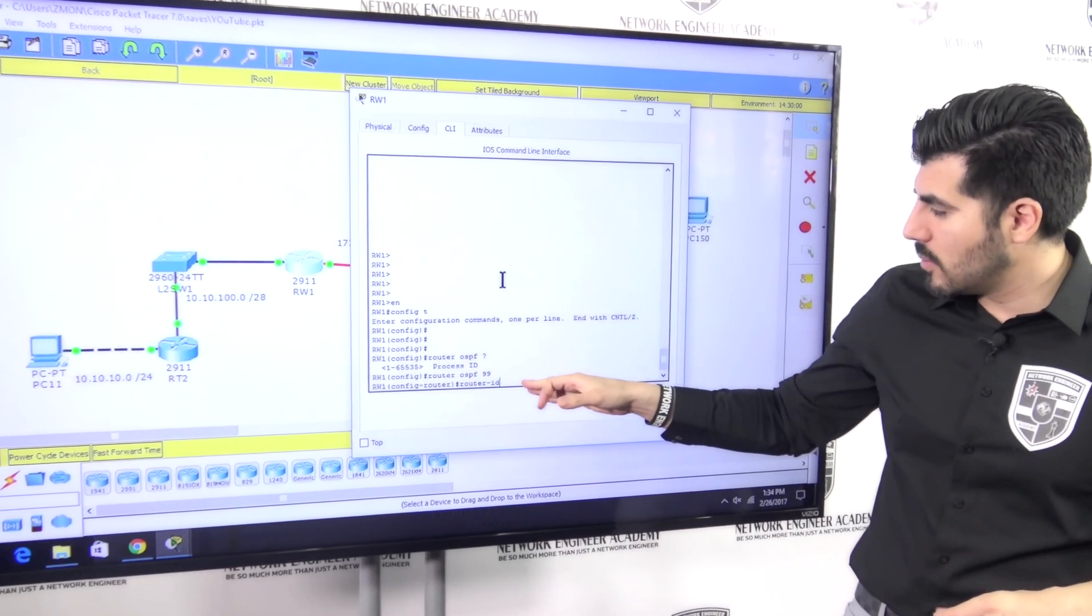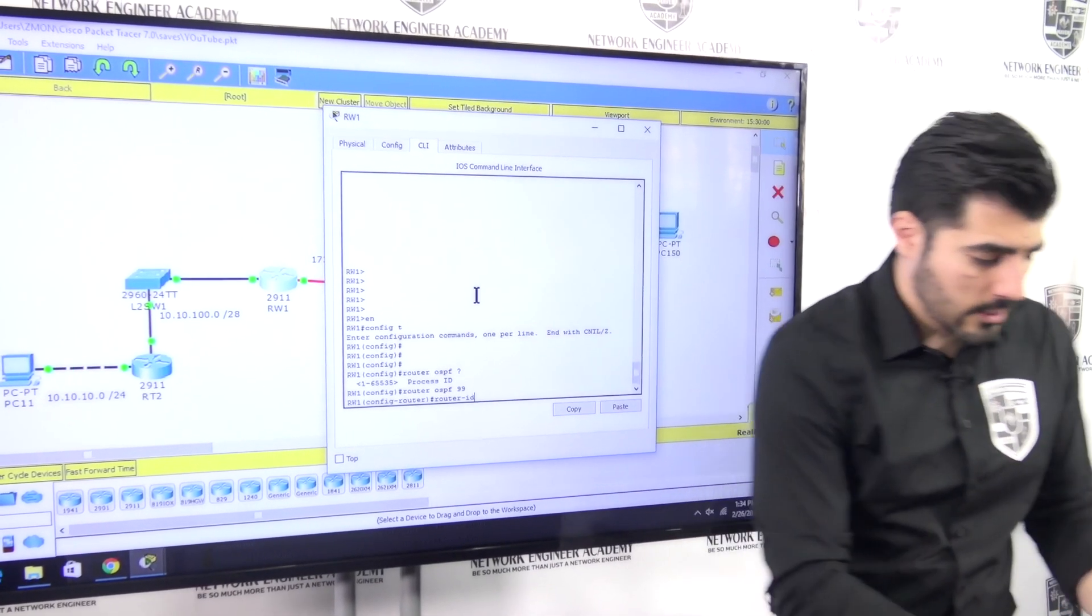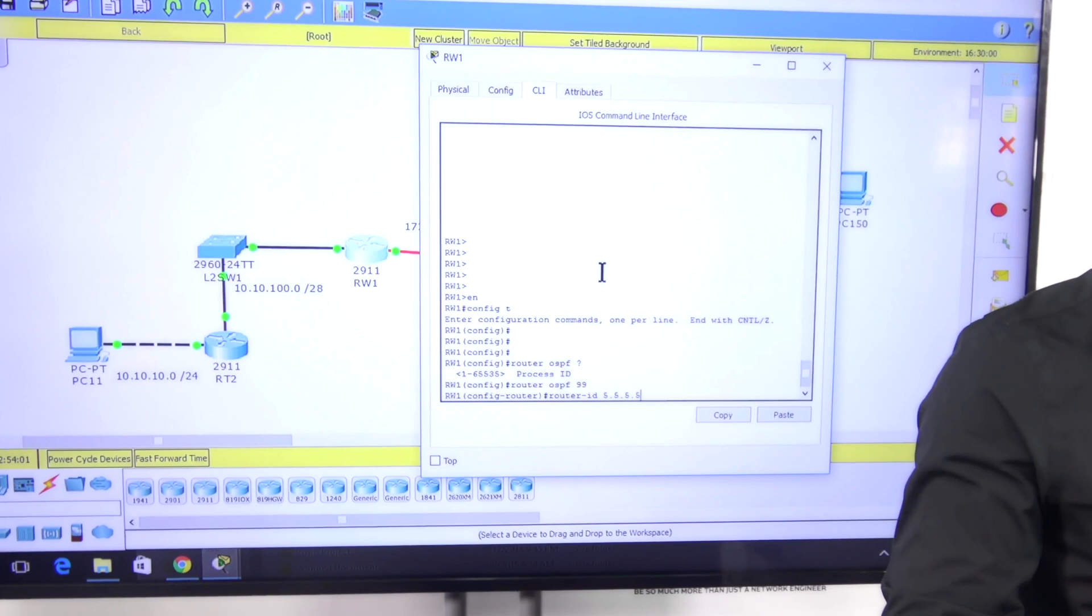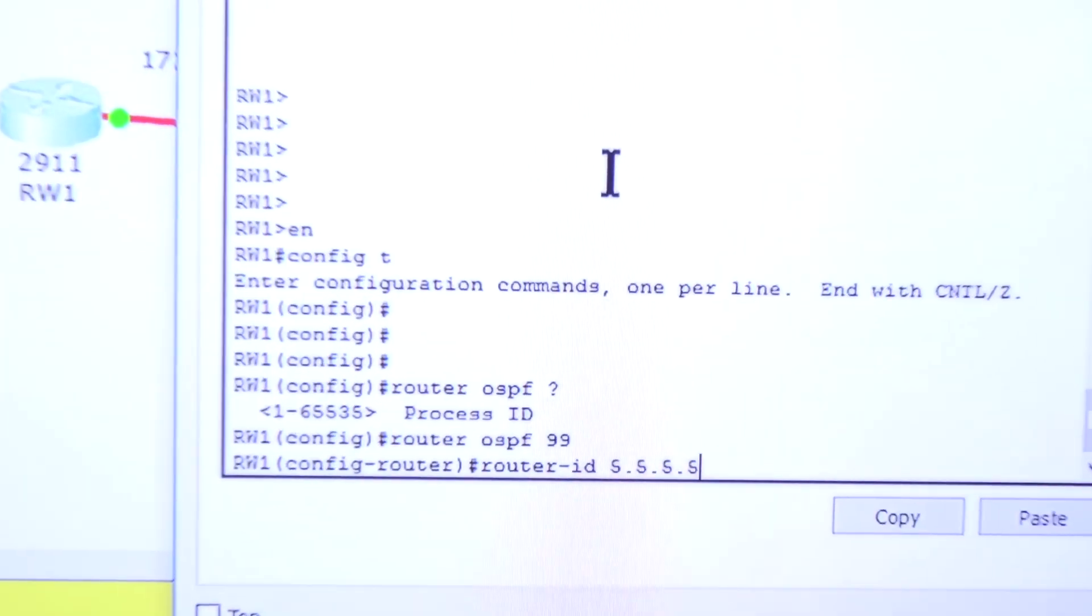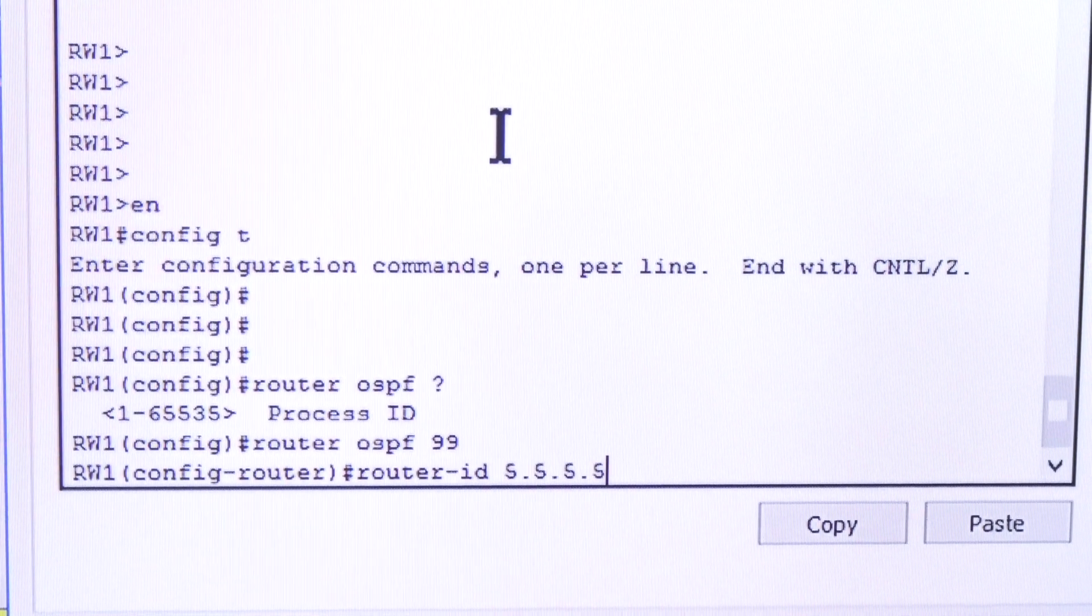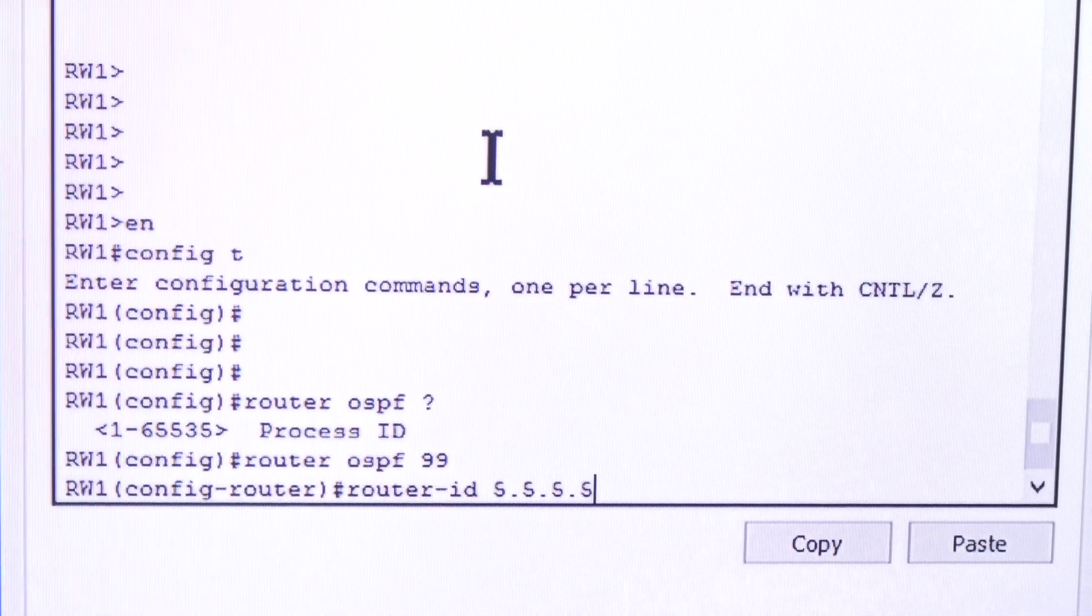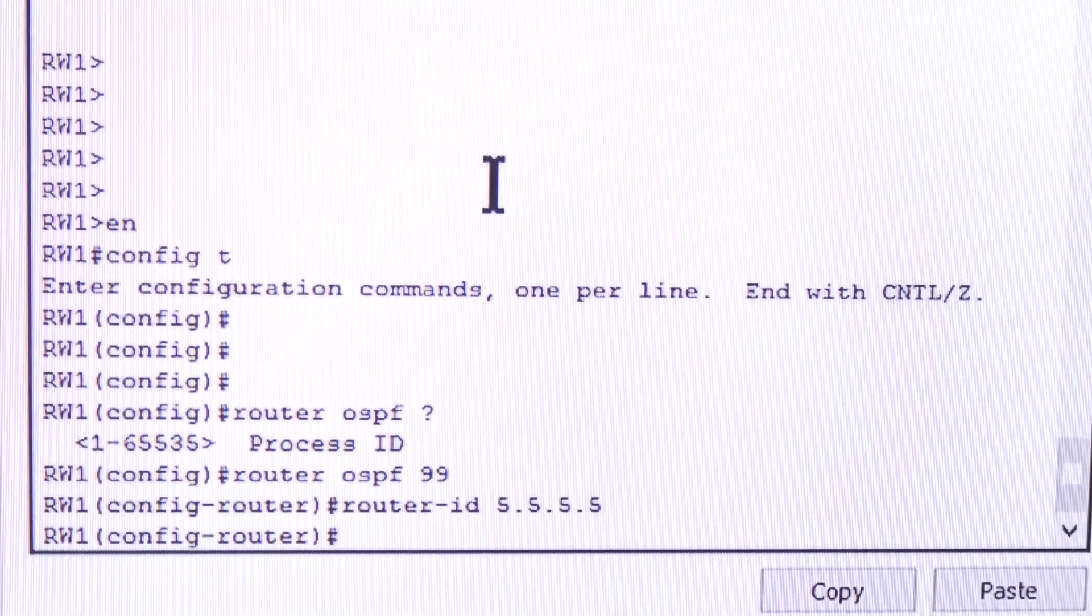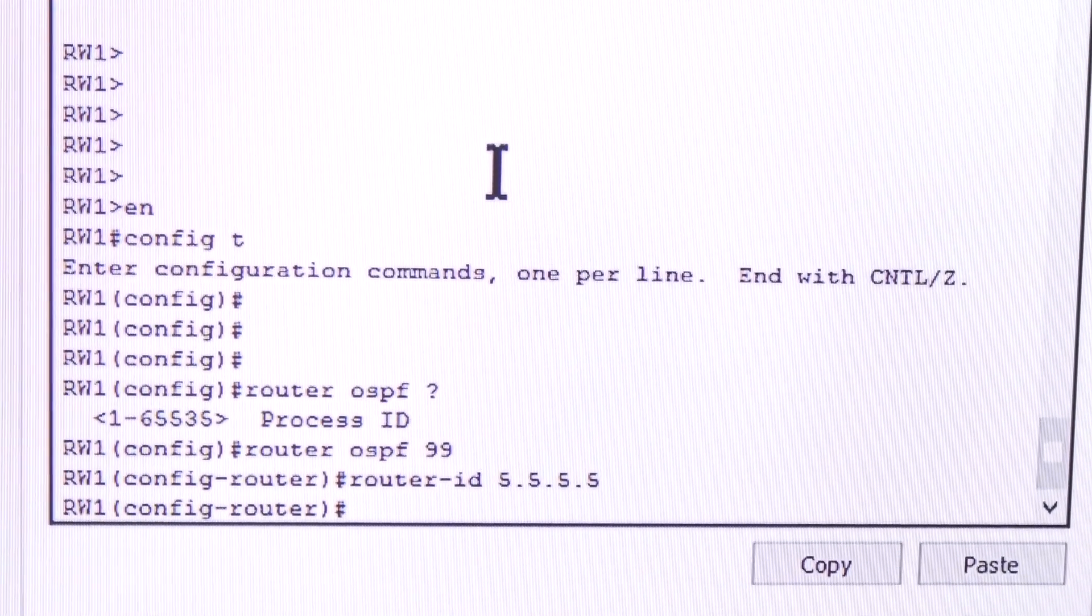So in this case, what I'm going to do, I'm going to put one myself and I'm going to do 5.5.5.5 just because I feel like it. Once again, it's not like you're putting a public IP address. No, it's not. It looks like an IP, but it's not an IP address. I'm going to click enter. So I'm good there. I provided a router ID.